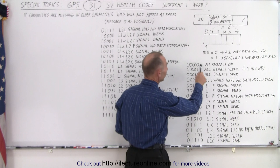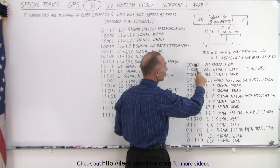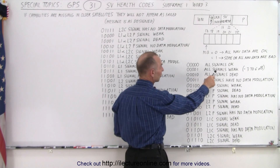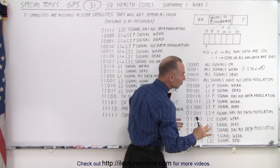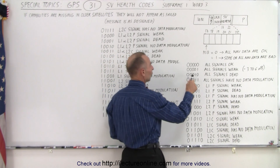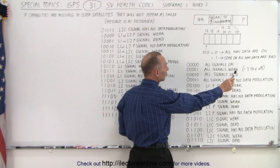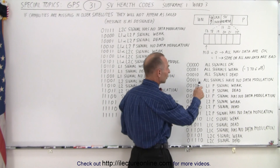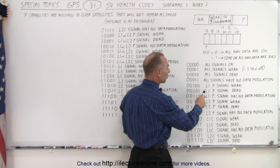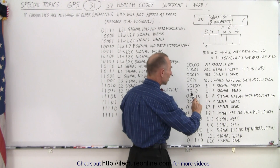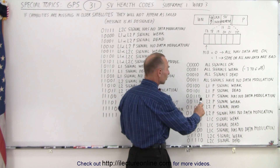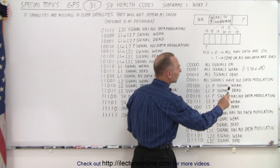If it's all 0s, including the 0 in the front, it means all signals are okay. If you get 00001, then all signals are weak, from 3 to 6 dB below the nominal value. If it's 00010, then all signals are dead. If it's 00011, then all signals have no data modulation. If you get 00100, then the L1P signal is weak. 00101 means L1P signal is dead. 00110 means L1P signal has no data modulation.